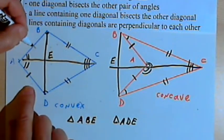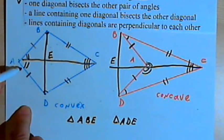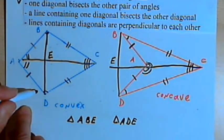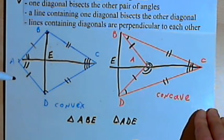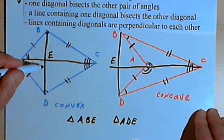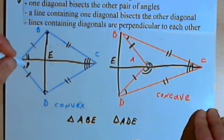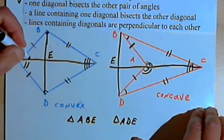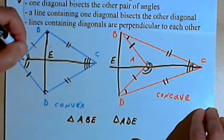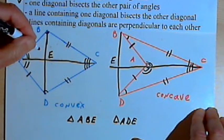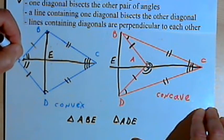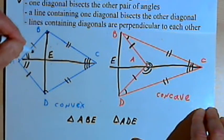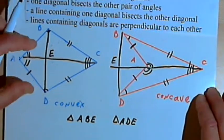I know that side AB is congruent with side AD. I know that angle BAE is congruent with angle DAE. That's for the convex kite. And we know that both of these triangles, ABE and ADE, share side AE. So we've got, at least for the convex kite, two congruent triangles.